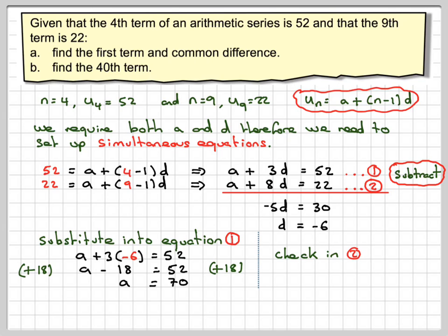You should just check that works in equation 2. So checking: a is 70, d is -6. So we do 70 + 8(-6). That's 70 + (-48), which gives me 22, which is what I wanted to find. That's OK.